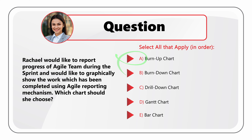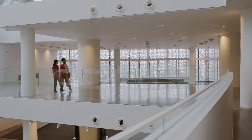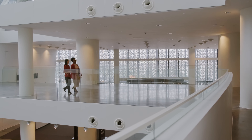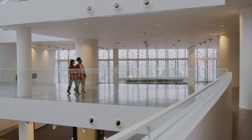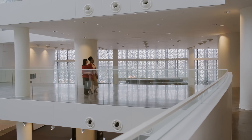Now let's look at the incorrect solutions. Choice B: Burn-down chart. Even though the burn-down chart demonstrates remaining work, it is not the correct answer here, because Rachel is looking to show completed work, not the remaining work.